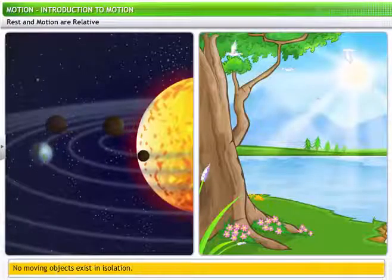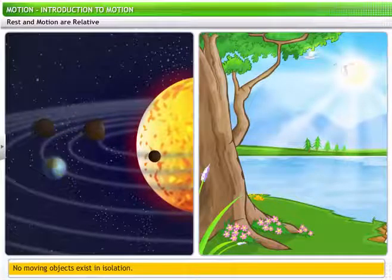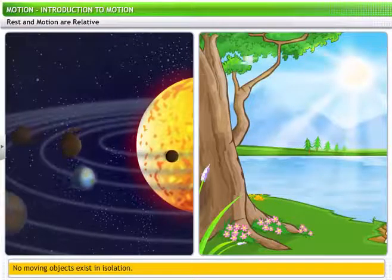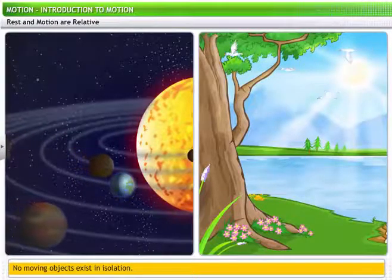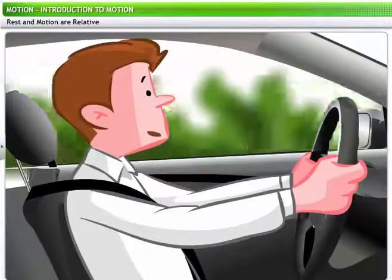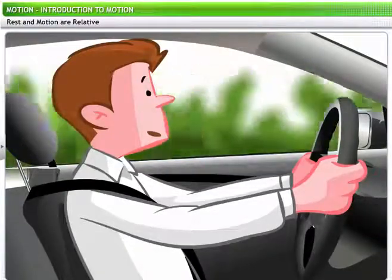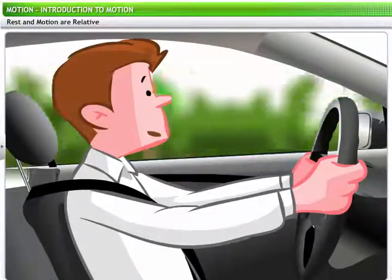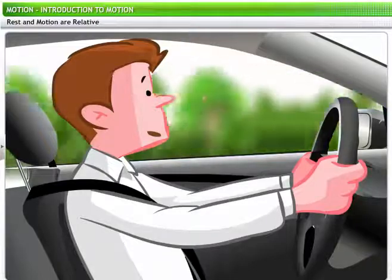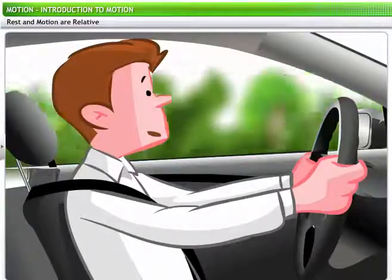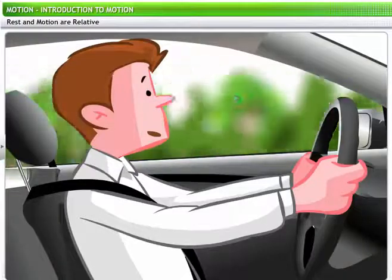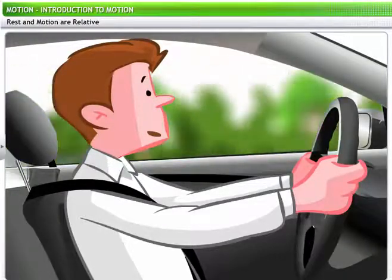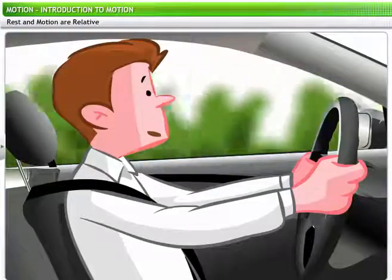None of the moving objects that we have looked at exist in isolation. They may have other moving or stationary objects in their environment. What happens when we compare the state of two or more than two objects? For instance, let us consider the state of a car driver. Is he at rest or in motion? It is difficult to answer this question.